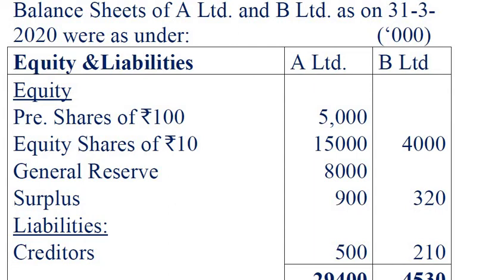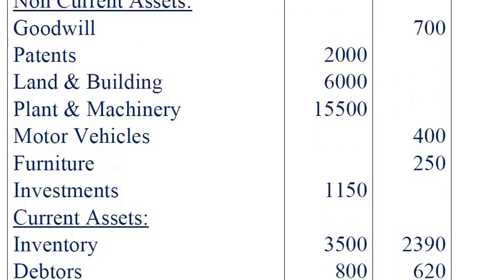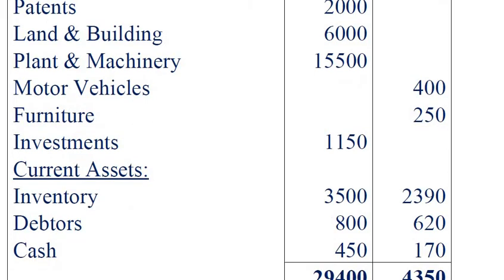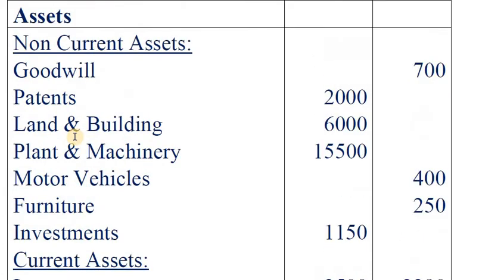General entries in the books of B. Ltd. First entry — entry for assets taken over. Realization account Dr. to goodwill, to motor vehicles, to furniture, to inventory, to cash, to debtors.